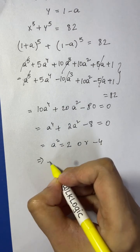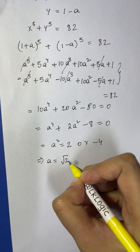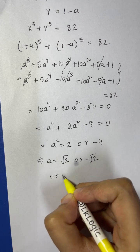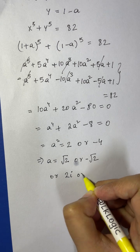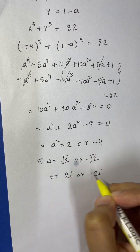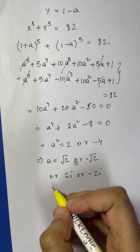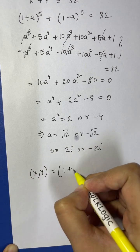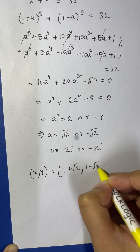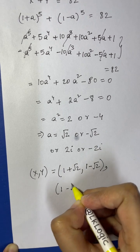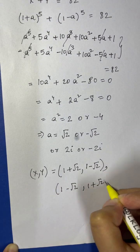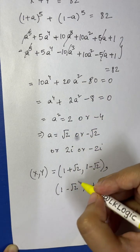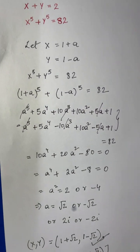So a equals plus or minus square root of 2 (real solutions) or plus or minus 2i (complex, rejected). Substituting back: x and y equal (1 + √2, 1 − √2) or (1 − √2, 1 + √2) — the same solutions as before. Both methods give the same result.